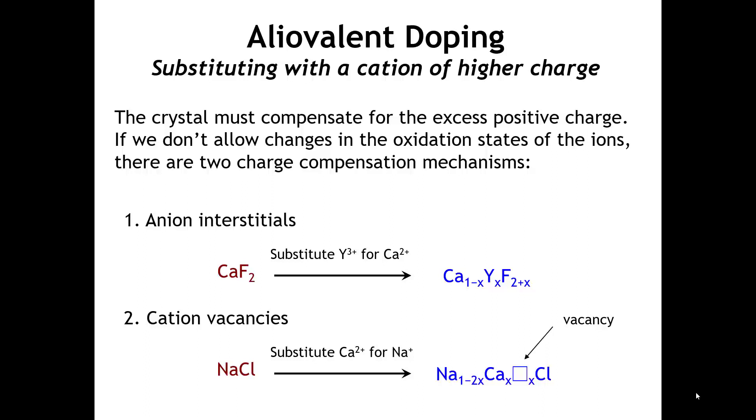The other way to compensate for this excess positive charge is to put vacancies on the cation site. If you substitute calcium 2-plus for sodium in the sodium chloride crystal, the compensating defect mechanism is a vacancy on the cation site.